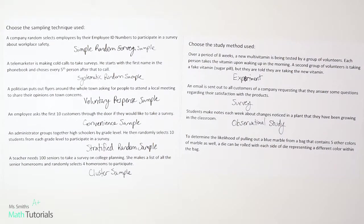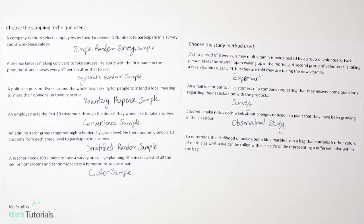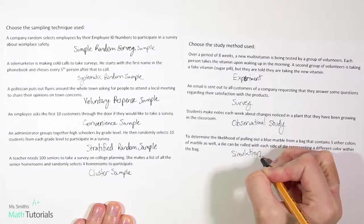To determine the likelihood of pulling out a blue marble from a bag that contains five other colors of marble as well, a die could be rolled with each side representing a different color within the bag. They have six colors of marbles — blue plus the five others — and a traditional die has six sides. This one is going to be a simulation.